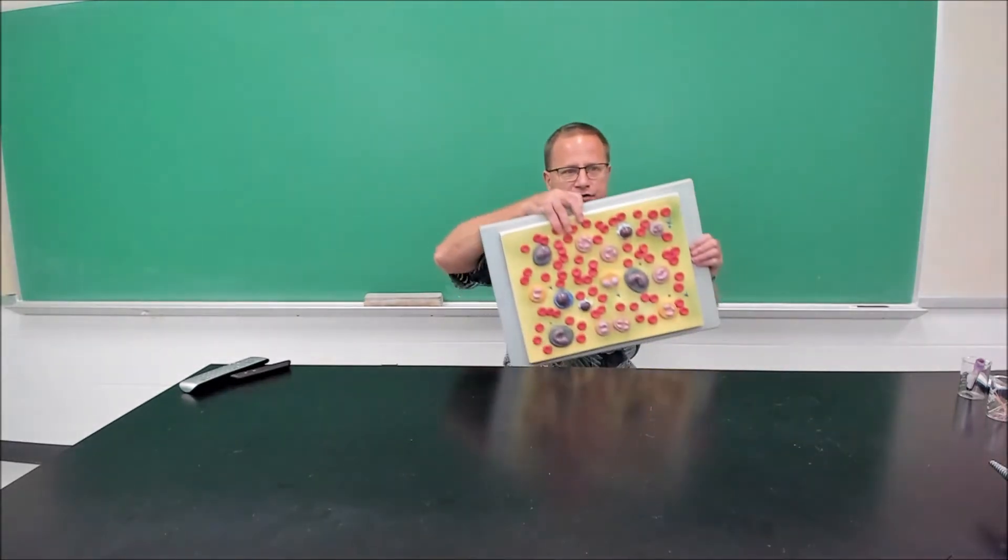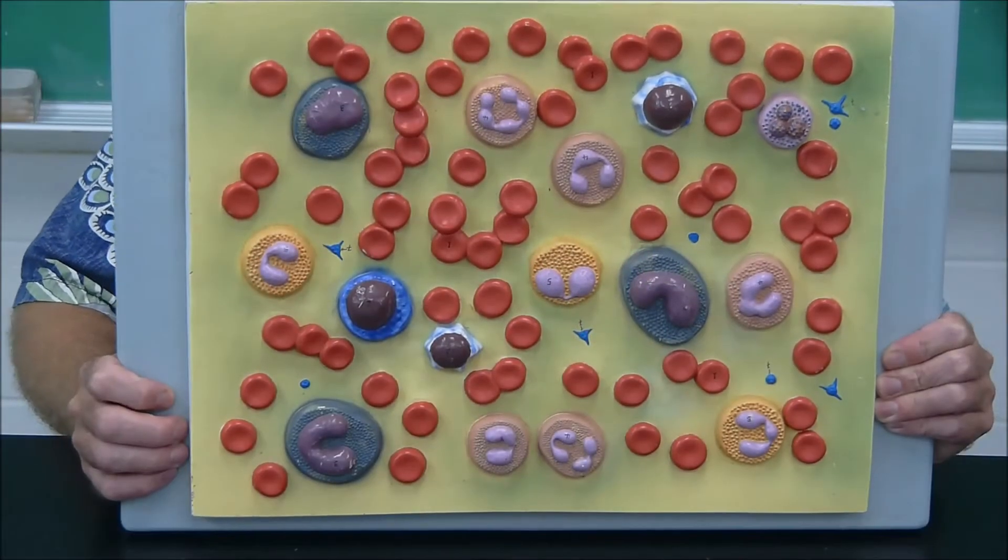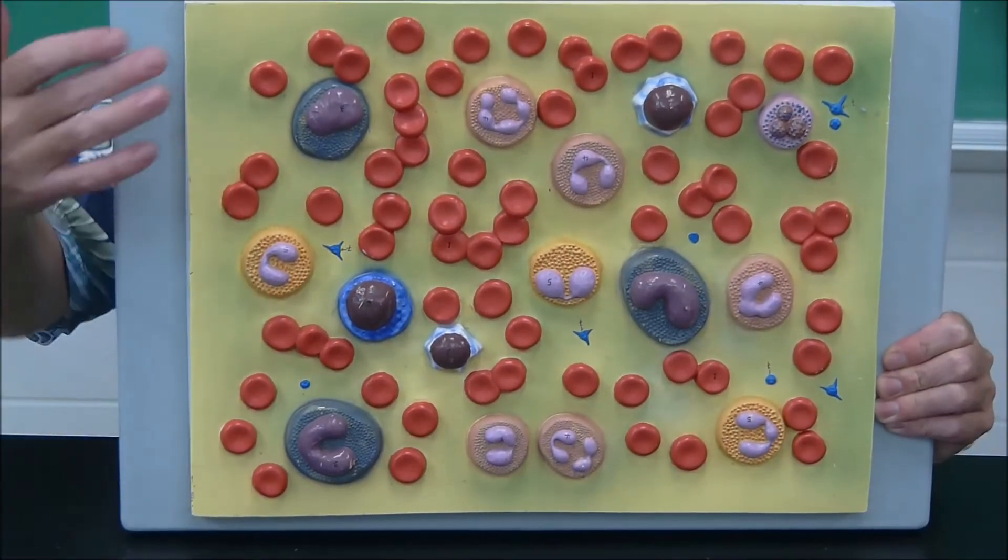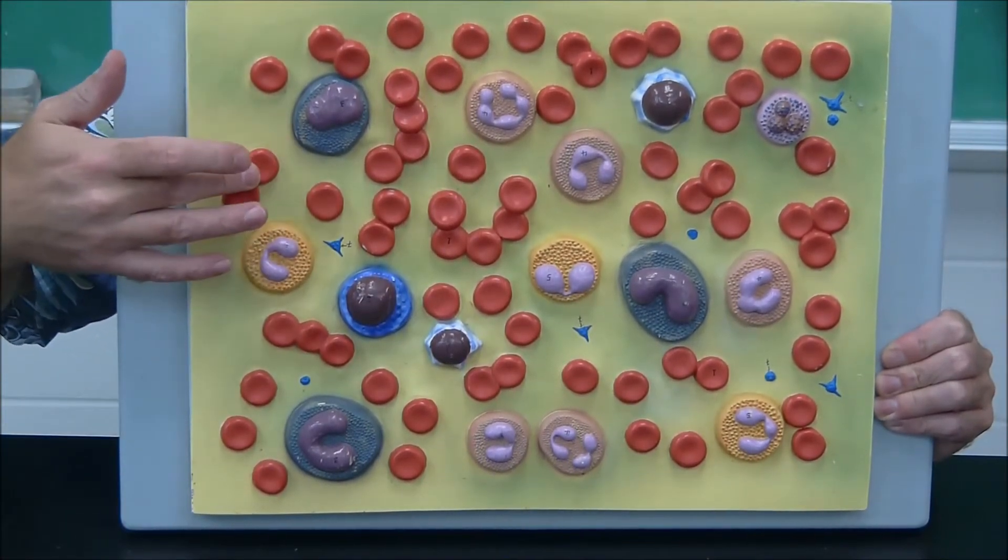Let's take a look at our representations of red and white blood cells. What you can see on this model is blood is made up of white blood cells, which are the bigger cells, as well as the red blood cells, which are these guys right in here with the red part.